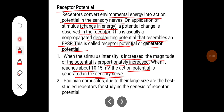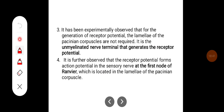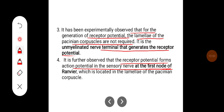Pacinian corpuscles, due to their large size, are the best studied receptors for studying the genesis of receptor potential. It has been experimentally observed that for the generation of receptor potential, the lamellae of the Pacinian corpuscle are not required — it is the unmyelinated nerve terminal that generates the receptor potential. The receptor potential then forms an action potential in the sensory nerve at the first node of Ranvier, which is located within the lamellae of the Pacinian corpuscle.